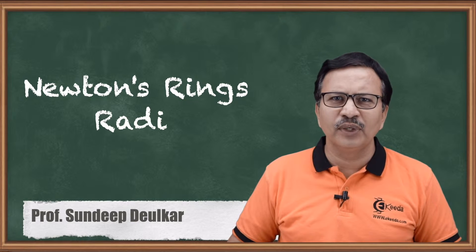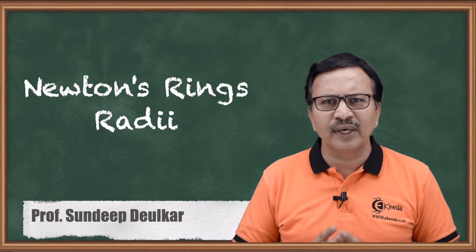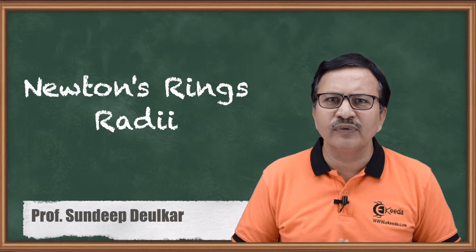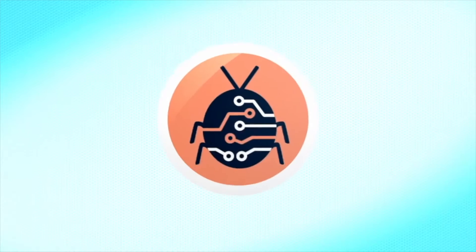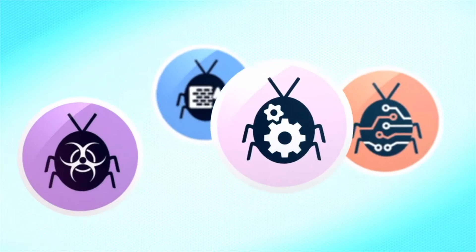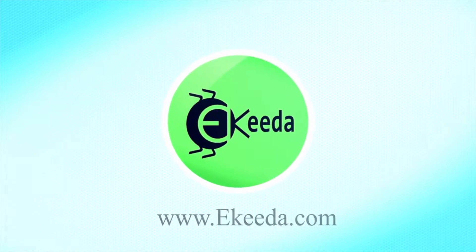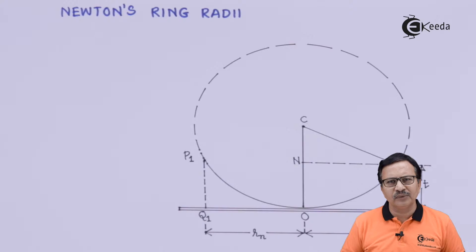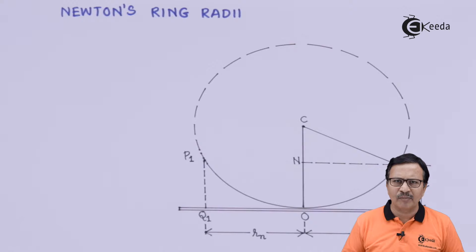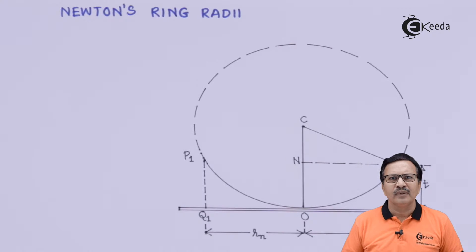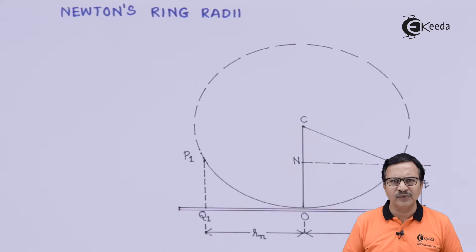Hello friends. In this video we are going to learn about how to find out the radius of Newton's rings. In order to find out the radius of Newton's rings, we consider a schematic diagram of the entire Newton's rings arrangement. In this case, we are not going to show any ray diagram but rather we are going to show the plano-convex assembly.